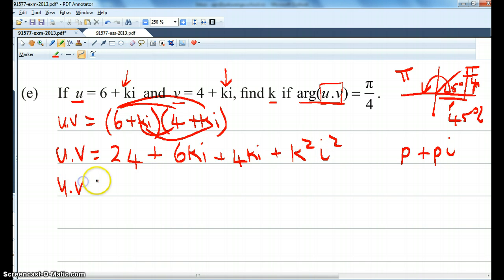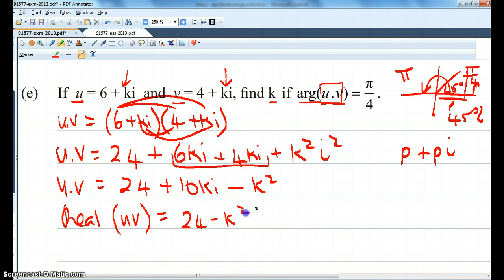But i squared is negative 1, so that's minus k squared. So the real part of uv is going to be 24 minus k squared. And the imaginary part of uv is going to be 10k.